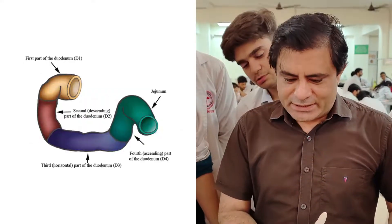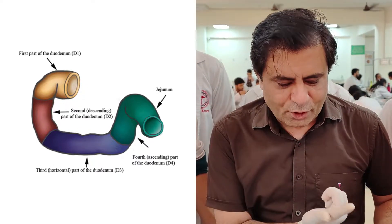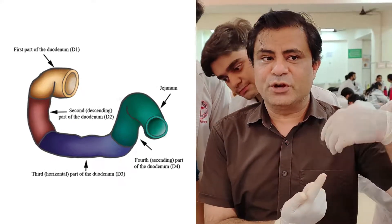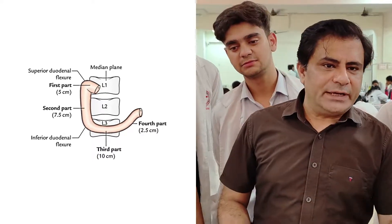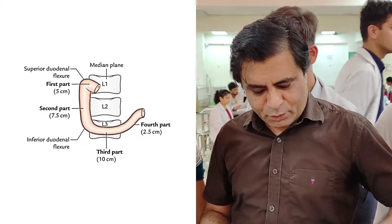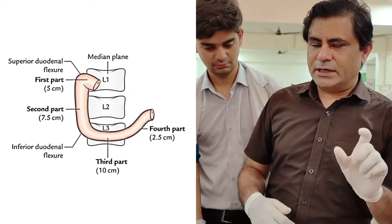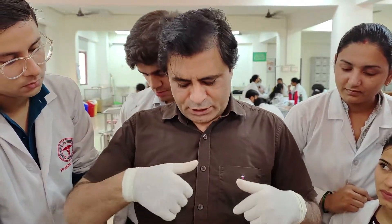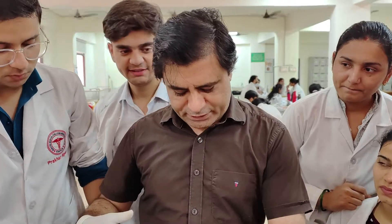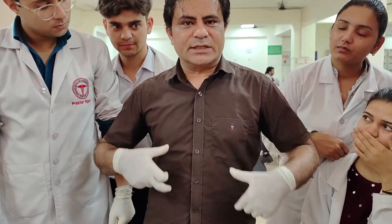The fourth part ascends upwards and forwards — importantly, it ascends upwards and forwards — because now the duodenum will loop forward into the jejunum. It is the smallest portion, around 2.5 cm, lying opposite L3 and reaching the lower border of L2. So to summarize the measurements: first part 5 cm, second part 7.5 cm, third part 10 cm, and fourth part 2.5 cm.